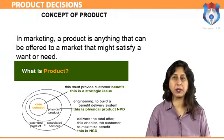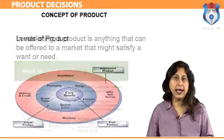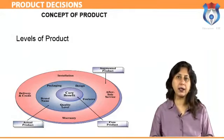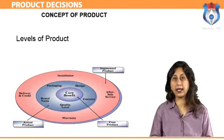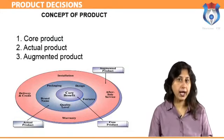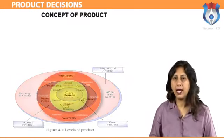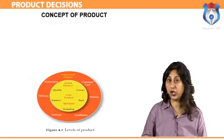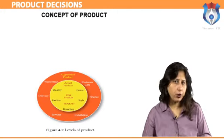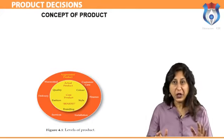There are three levels of products which help to define the product in a better manner. These three levels are: core product, actual product, and augmented product. Supposing you're planning on launching your own car manufacturing unit — what would be your core product? Would it be the car itself? No.